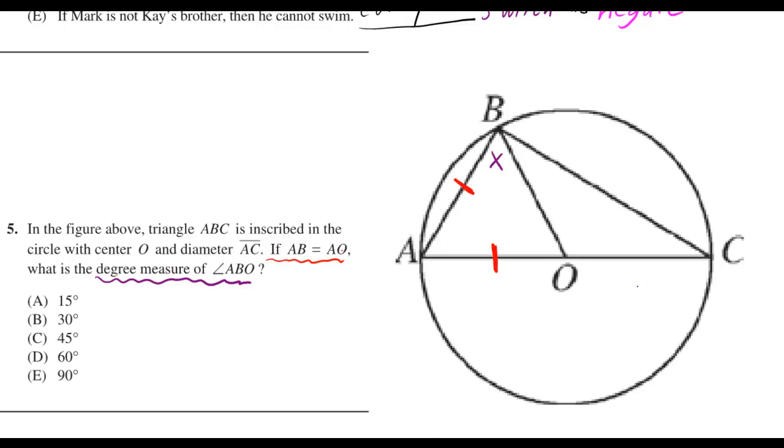They told us AB is equal to AO, that means this side is equal to that side. They want to know the degree measure of angle ABO, well I labeled that with an X.